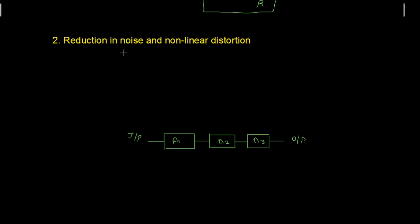The second advantage is reduction in noise and non-linear distortion. Noise is an unwanted signal, and negative feedback decreases the amount of noise such as power supply hum and non-linear distortion by a factor of 1 plus beta·a. So noise with feedback equals noise without feedback divided by 1 plus beta·a. But there is a price to pay — the reduction in overall gain.